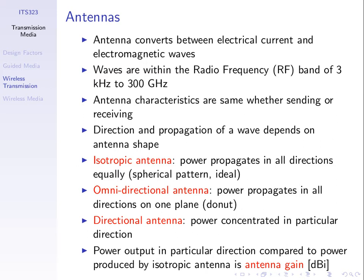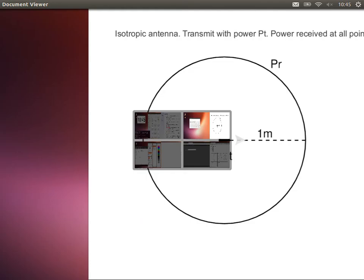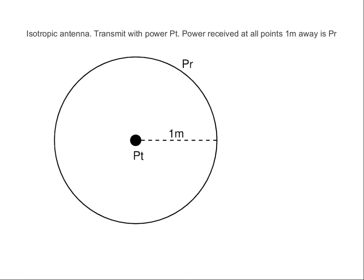Everything is done relative to the ideal isotropic antenna. We'll use this extra handout with pictures to demonstrate the concept of real antennas which have some directionality versus the isotropic antenna. I'm going to draw in a 2D picture — imagine just looking at one plane, say a horizontal plane. Let's say I've got an isotropic antenna at this black dot, and I transmit a signal with some power level called PT.